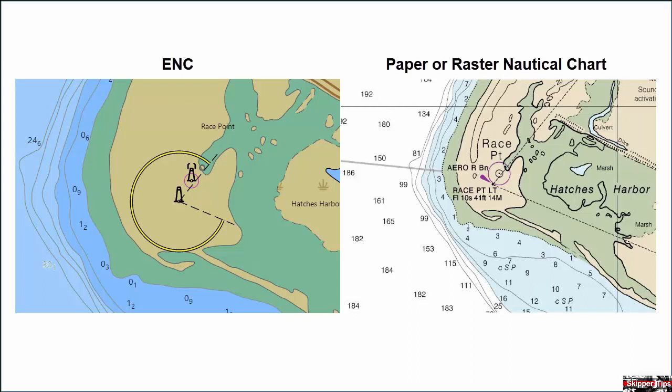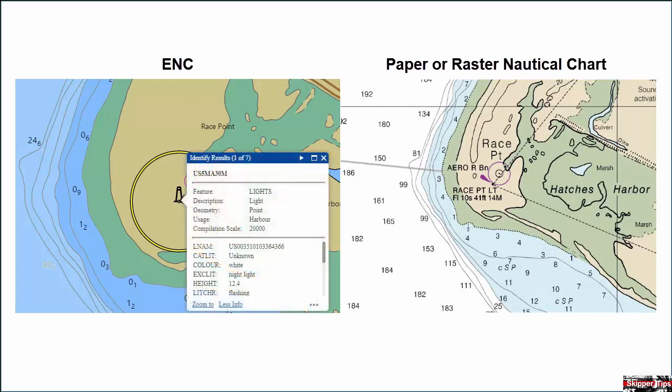Let's use our cursor to get more information on the ENC chart symbols. If we place our cursor over Race Point Light, a dialog box pops up. Concentrate on the data on the right column. We see a flashing white light with a height of 12.4 meters above sea level. Scrolling down, we find the light has an obscured sector between 292 degrees true and 220 degrees true.